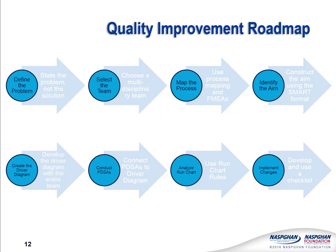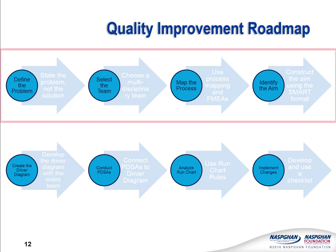Now that we have identified the framework we will be using for our improvement work, we will start to apply it using the Quality Improvement Roadmap. This roadmap consists of eight different steps. In this module, I will be reviewing the first four steps in the roadmap. The following four steps will be covered in Module 2.